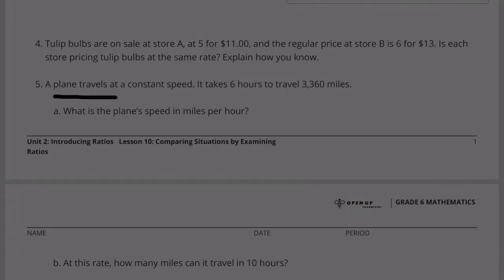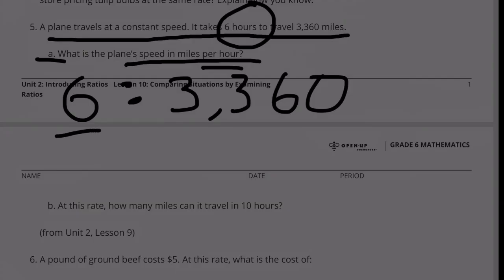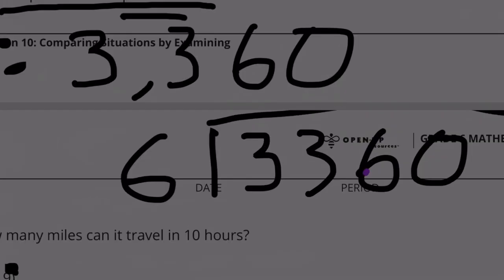Number 5, a plane travels at a constant speed. It takes 6 hours to travel 3,360 miles. A. What is the plane's speed in miles per hour? They're asking about 1 hour. So we need to change the 6 hours to 1 hour. Currently, it's a 6 to 3,360 ratio. 6 divided by 6 equals 1 and 3,360 divided by 6. How many times does 6 go into 33?